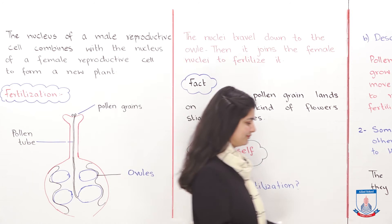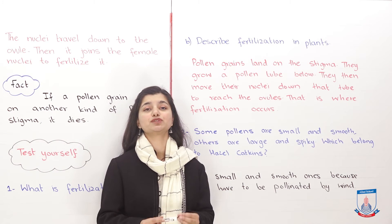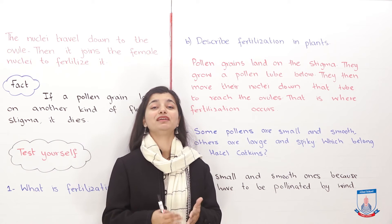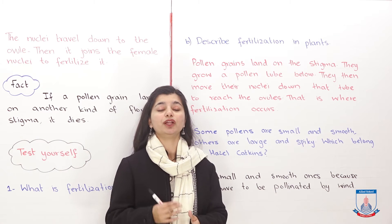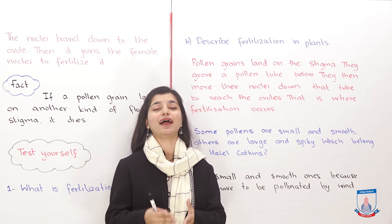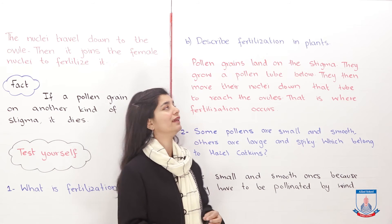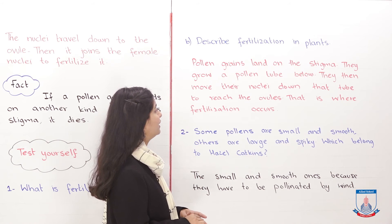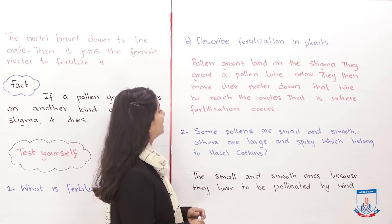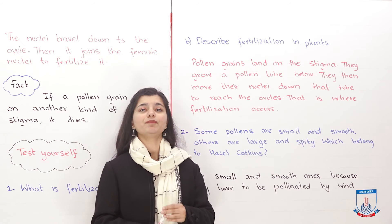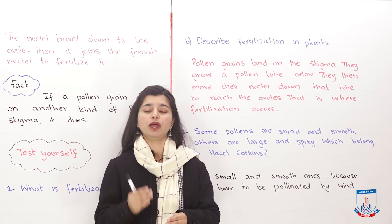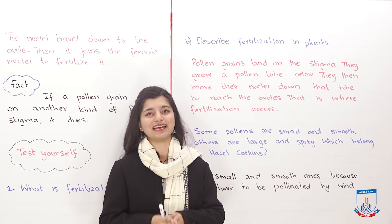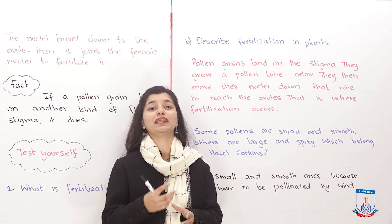Question number 4 is: describe fertilization in plants. In the first part we defined fertilization; in the second part we describe what is happening in the process. Pollen grains land on the stigma. They grow a pollen tube below. They then move their nuclei down that tube to reach the ovules — that is where fertilization occurs. First, pollen grains land on the stigma; then the pollen tube grows; the nuclei move down the pollen tube; they fertilize with the ovules; and new seeds, new offspring, or new plants are produced.